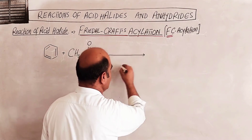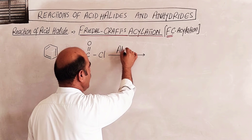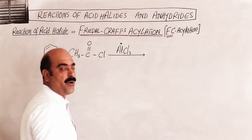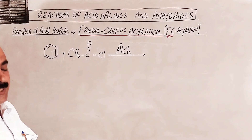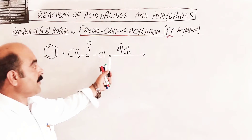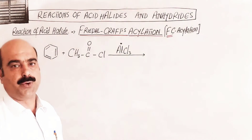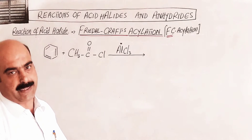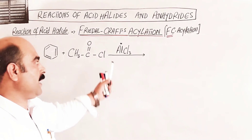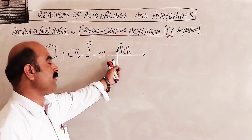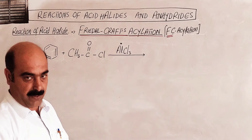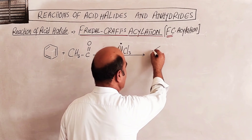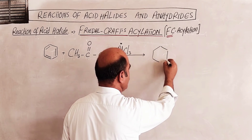The catalyst used is aluminium chloride (AlCl3). Aluminium chloride accepts electrons — aluminium has only 3 electrons, making it electron deficient. It can accept electrons to complete its octet, acting as a Lewis acid catalyst in this reaction.